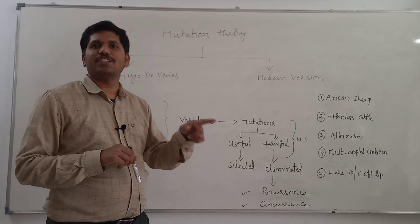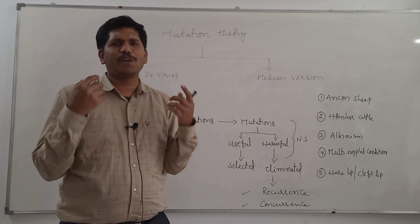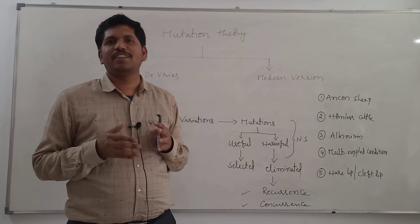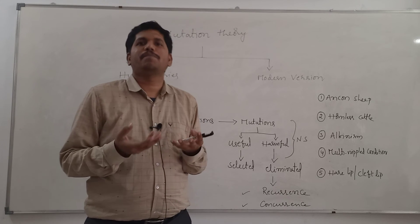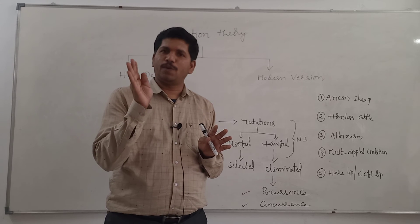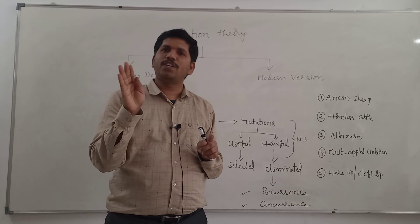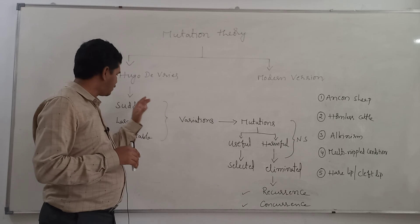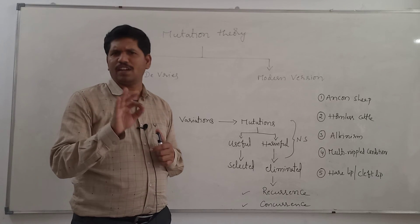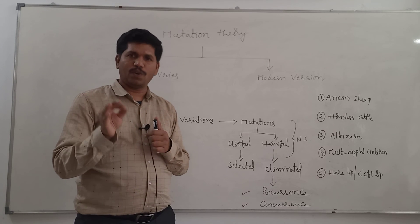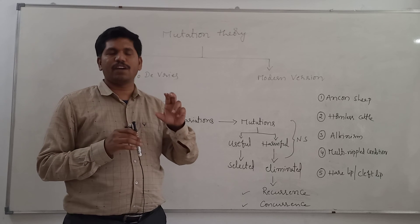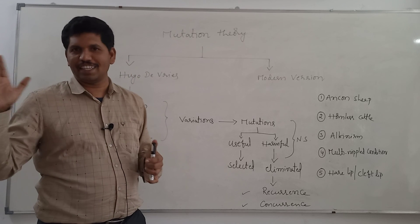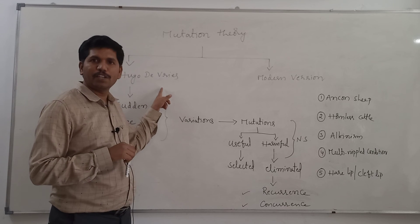The sudden, large, inheritable variations are produced actually because of change in DNA sequence. But at that point of time, Hugo de Vries did not know about DNA sequence, how it causes sudden variations, or how it becomes inheritable. That's why, if the question is asked on mutation theory of Hugo de Vries, don't mention the term DNA. You have to mention that there are variations which are sudden, large, and inheritable. Please be cautious — don't describe mutation as change in DNA sequence when answering about Hugo de Vries's mutation theory.